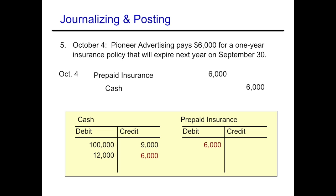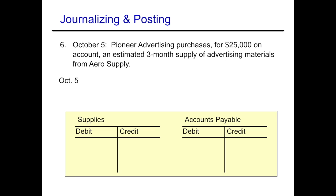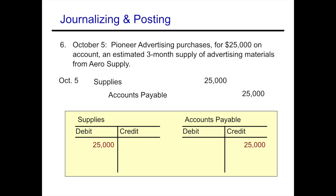On October 5th, Pioneer Advertising purchases $25,000 of advertising materials on account from Arrow Supply — an estimated three-month supply. Supplies are like a prepaid and are an asset, so we debit supplies. We credit accounts payable because it was purchased on account — cash did not change hands yet. We move that from the journal to the ledger, debiting supplies and crediting accounts payable.